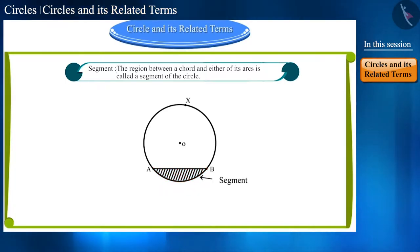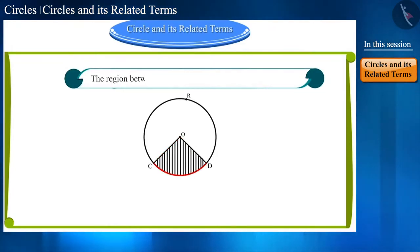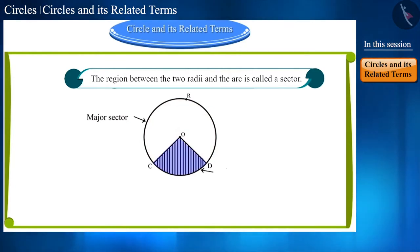You can see that we got two types of segments of circle. We call the large part as major segment and the small part as minor segment. In a circle, if two radii are made in this way, then the area between these radii and the arc is called sector. This large part is major sector and small part is minor sector.